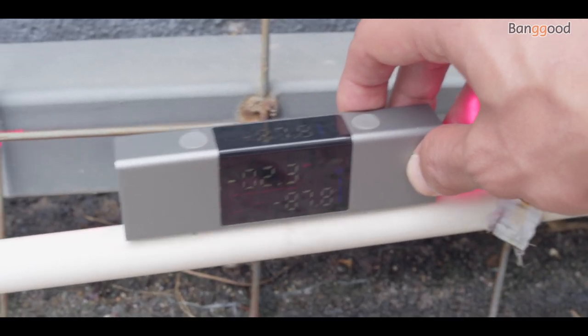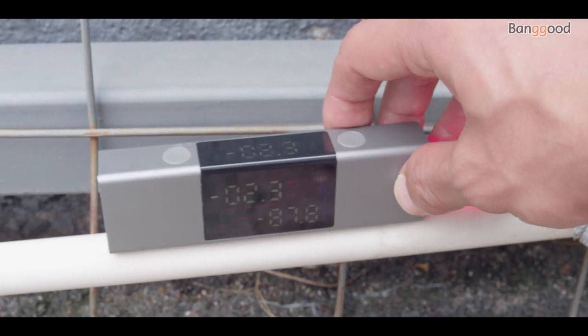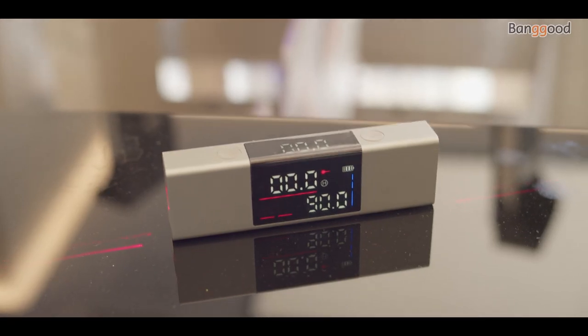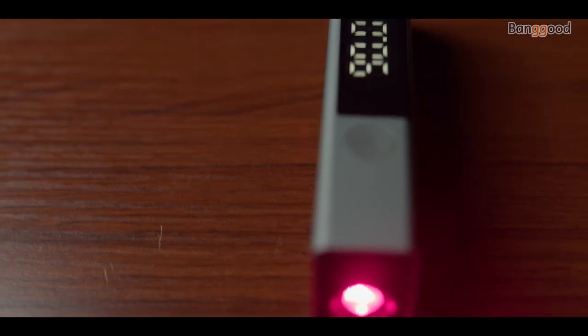A laser leveling device will emit a beam that gives you a straight line reference along any surface, such as a wall or floor.